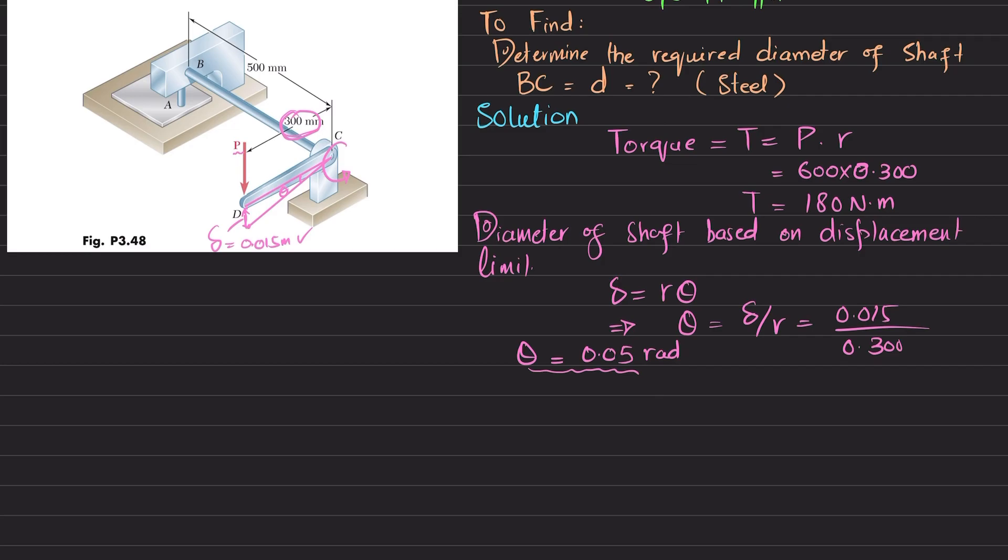This is actually the angle of twist that will be developed in shaft BC as well. We know that angle of twist equals T times L divided by G times J, where J is pi over 2 times c to the fourth power if this shaft has radius c.